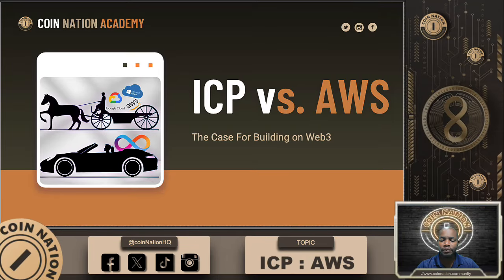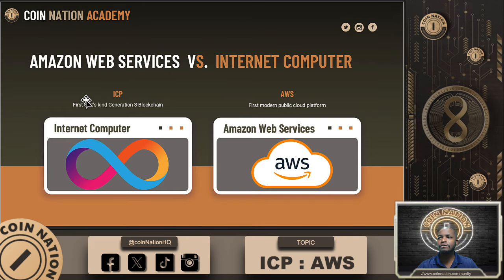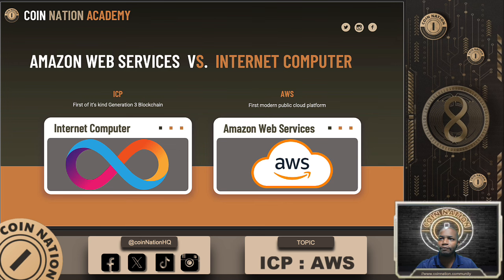Citizens, I think this will be a fun one because there's such a clear contrast between ICP and AWS — it's like black and white, hot and cold, light and dark. So let's dig into this. ICP is the first of its kind, Generation 3 blockchain. AWS is the first modern public cloud platform. The first thing we're going to talk about is container management.